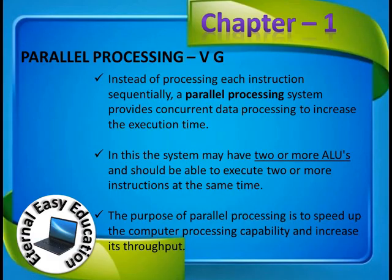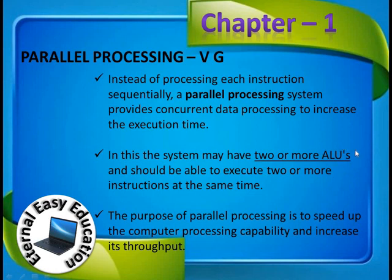What is parallel processing? Instead of processing each instruction sequentially, a parallel processing system provides concurrent data processing to increase execution capability. In this system it may have two or more ALUs — Arithmetic Logic Units — and is able to execute two or more instructions at the same time. If a system has more ALUs, it is able to process given instructions concurrently — that is parallel processing. The purpose of parallel processing is to speed up the computer's processing capability and increase its throughput.